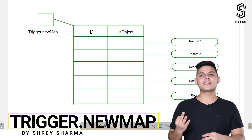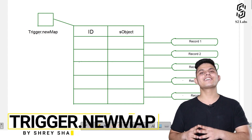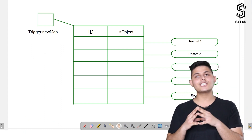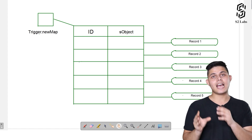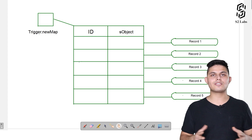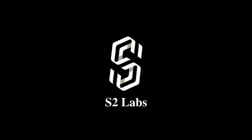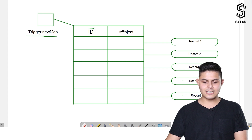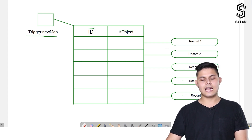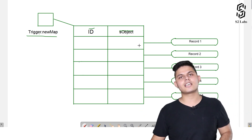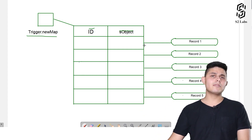The third and very important context variable is Trigger.newMap. Trigger.newMap basically returns a map which includes IDs as well as the SObject — exactly the records which initiated the execution of the trigger. Trigger.newMap contains a map with an ID and SObject, and the SObject contains a reference to the particular record which initiated the execution of the trigger.